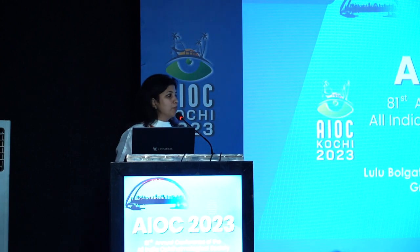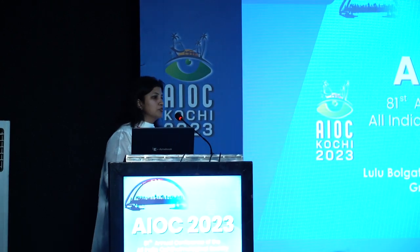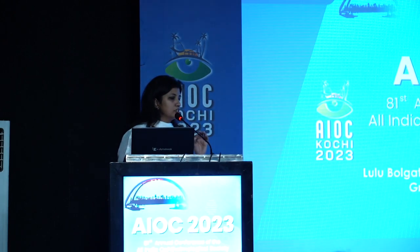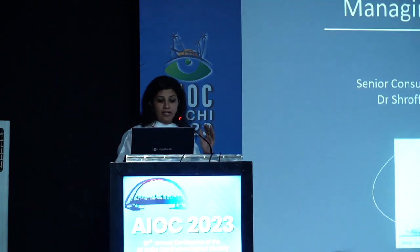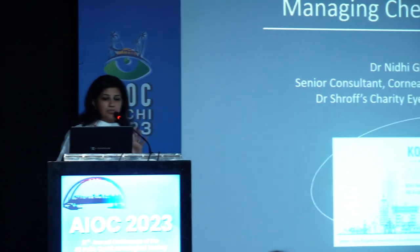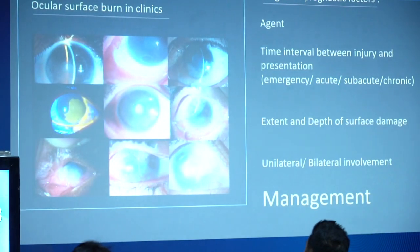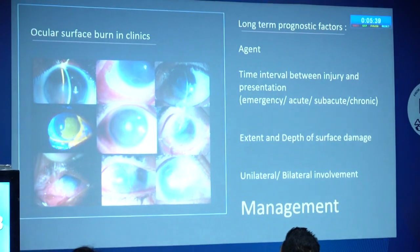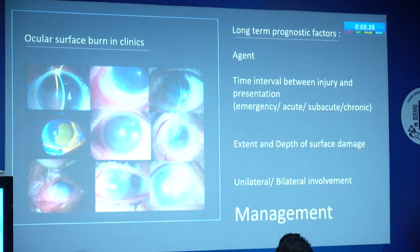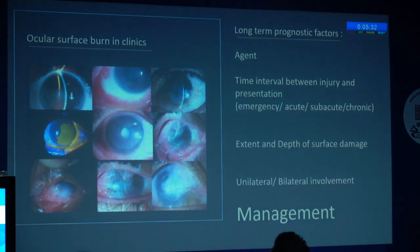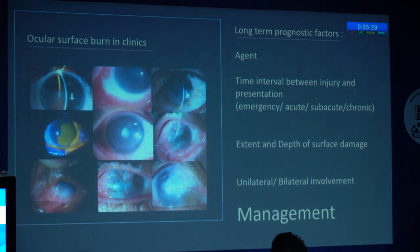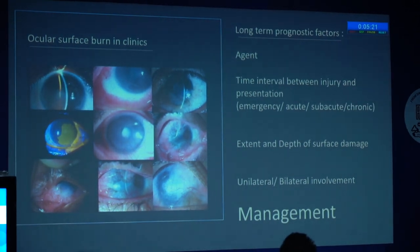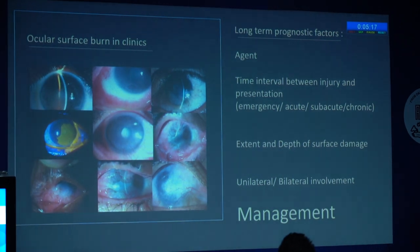My topic is A to Z of chemical burns. I'm going to show cases which I have managed from the first day of their presentation, so that after 10 years I can tell you what I have learned. When you see ocular surface burns, you see cases that vary in their etiology, day of presentation, and extent and depth of injury. What I've found is that it is the agent, the time interval between injury and presentation, the extent — not only depth of surface damage — and the bilaterality of injury that matters. What you can change is your management at every step whenever it presents.